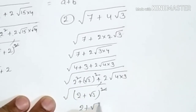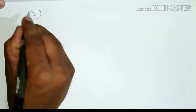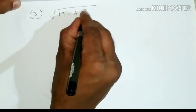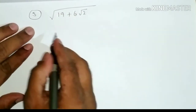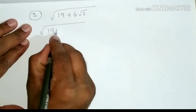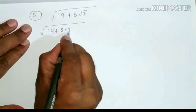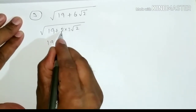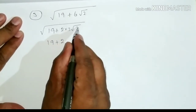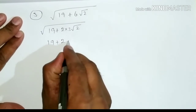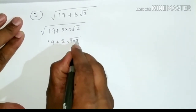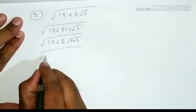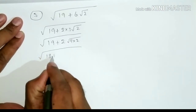The third question is the square root of 19 + 6√2. This can be written as 19 + 2·3·√2. Taking 3 inside the root it becomes √9, so we have 19 + 2·√9·√2. Now 19 is written as the sum of two numbers: 18 + 1.